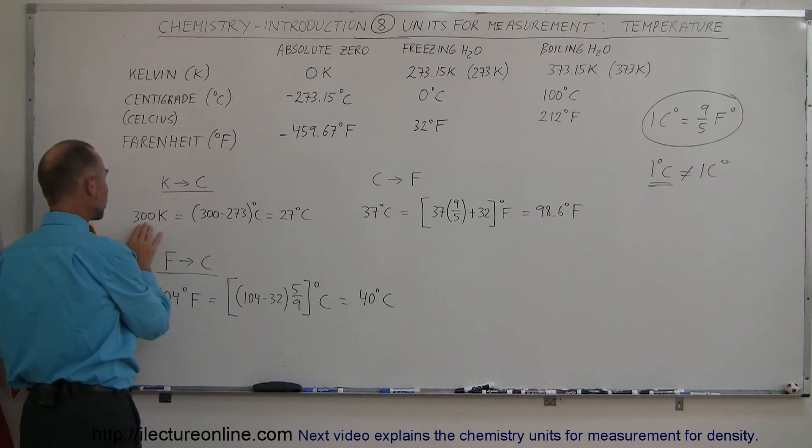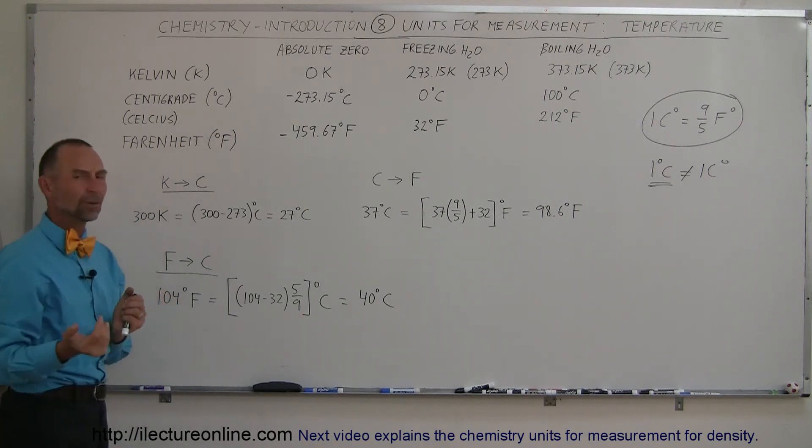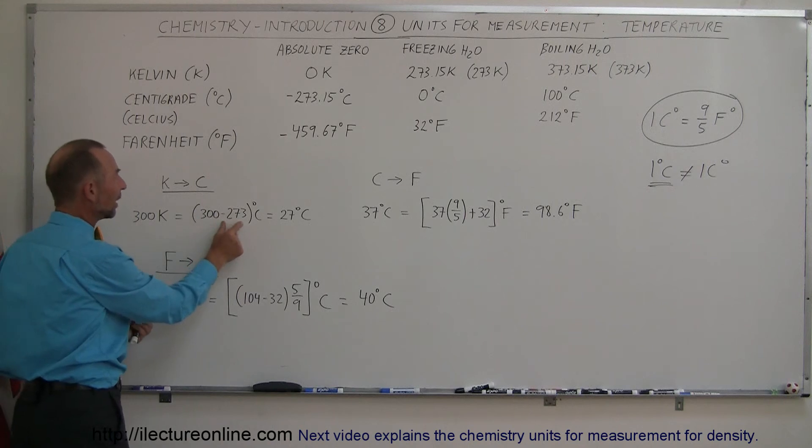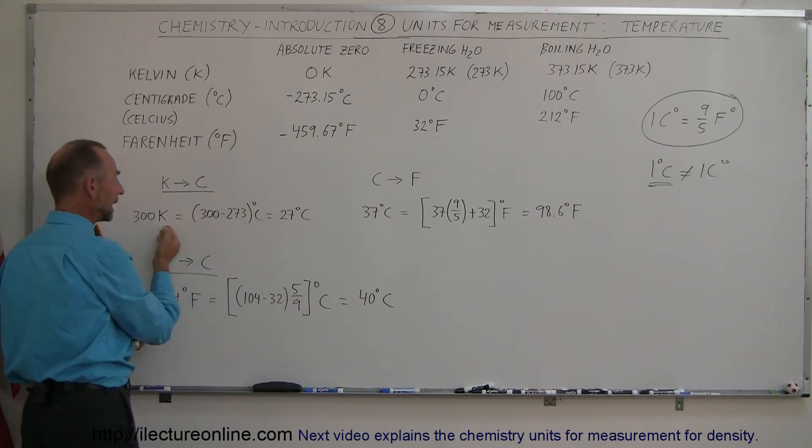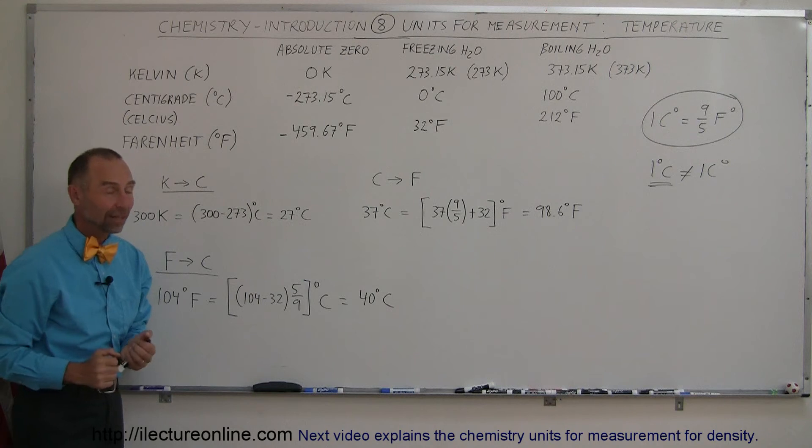And we have a temperature measurement of 300 Kelvin. How many centigrade degrees is that? And all we have to do is simply subtract that 273, so take 300 minus 273, and that's how we convert from Kelvin to centigrade degrees. So 300 degrees Kelvin is 27 degrees centigrade.